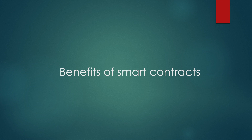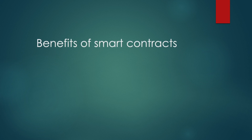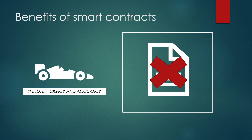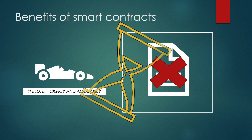Moving on, let's have a look at some of the benefits of using smart contracts instead of the traditional way of approaching transactions. One of the advantages is its speed, efficiency and accuracy. Once a condition is met, the contract is executed immediately and because smart contracts are digital and automated, there is no paperwork to process and there is no time spent reconciling errors that often result from manually filing in documents.